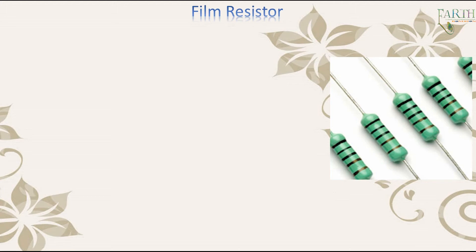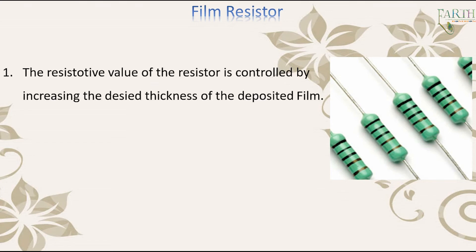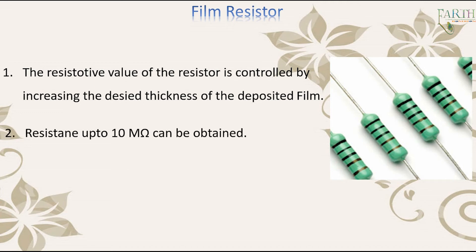Film resistor properties: 1. The resistive value of the resistor is controlled by increasing the desired thickness of the deposited film. 2. Resistance up to 10 megaohms can be obtained. 3. Have tolerance of 1% or less.